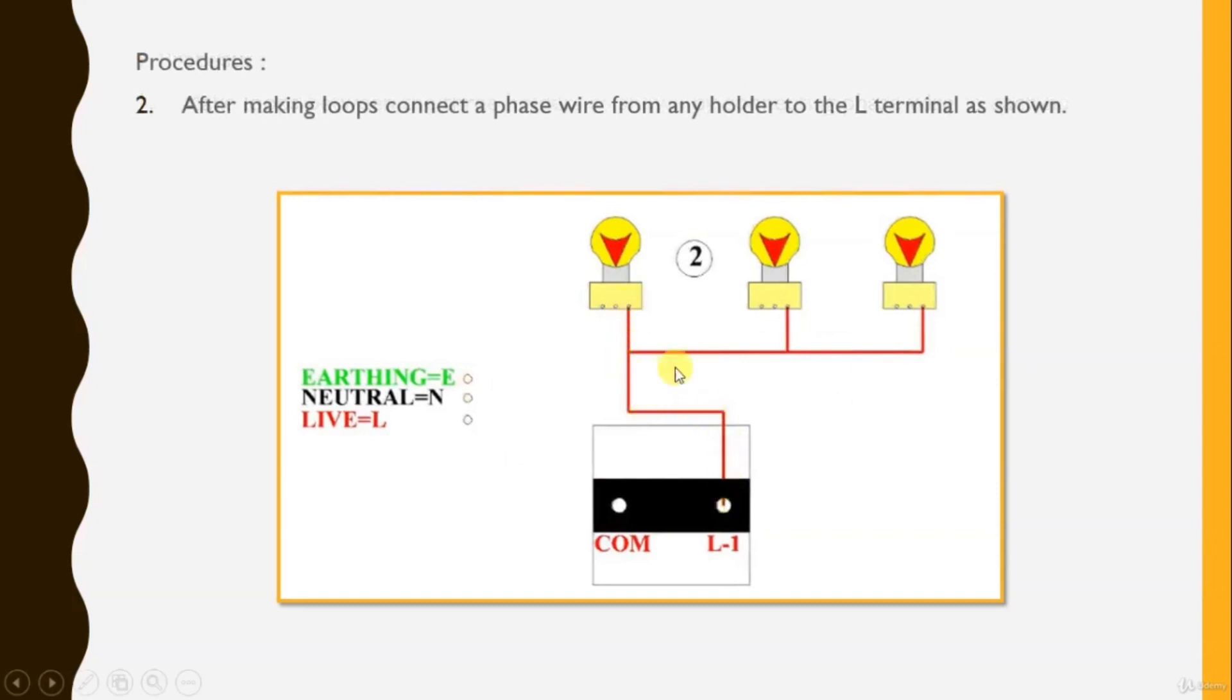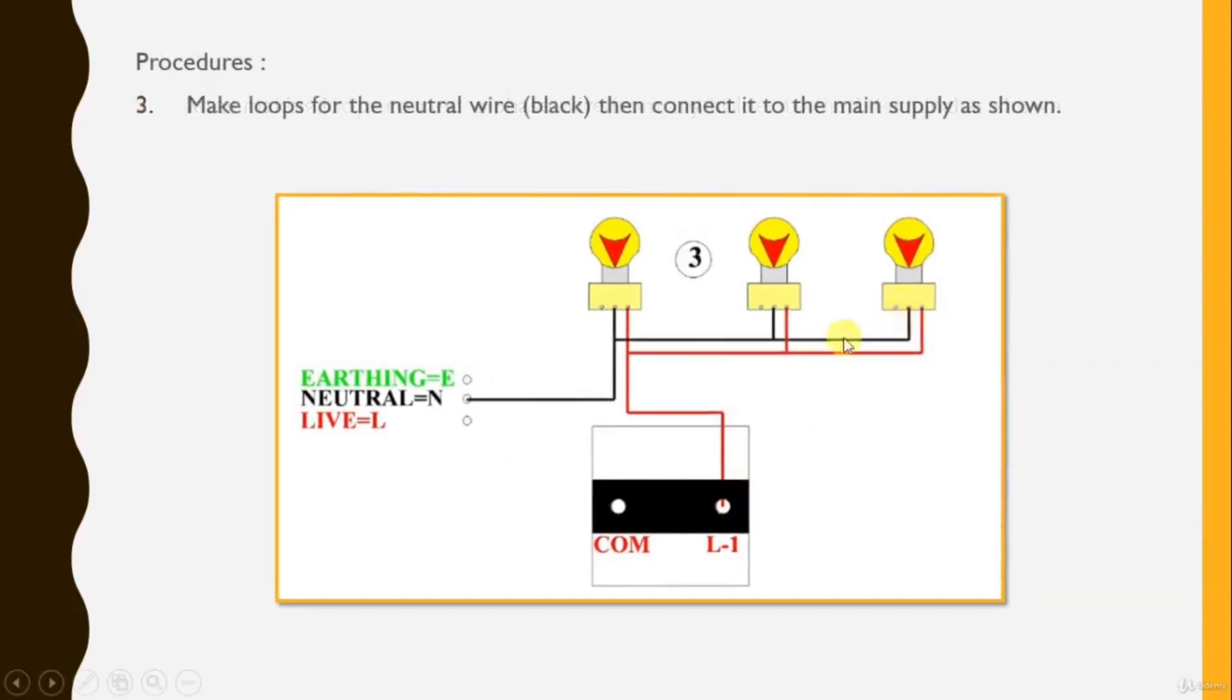Connect a red wire from the nearest holder to the L terminal as shown. Next, move to neutral wire.